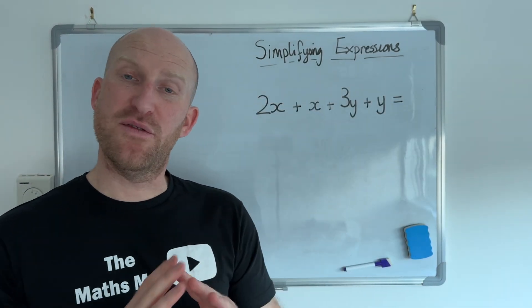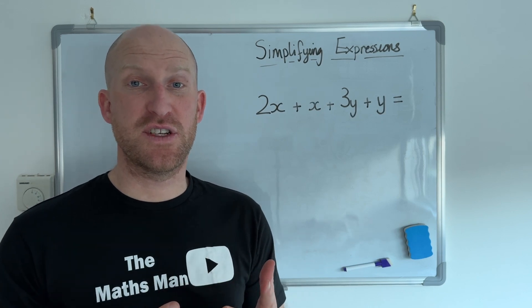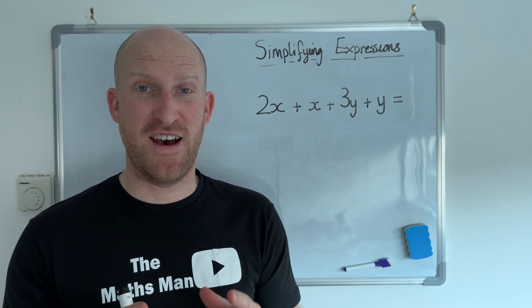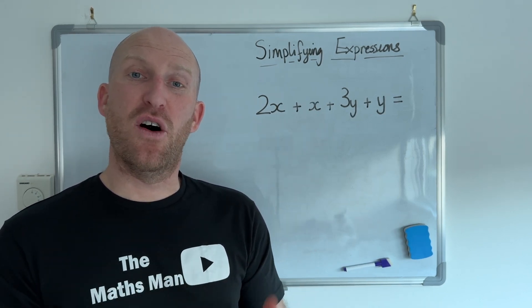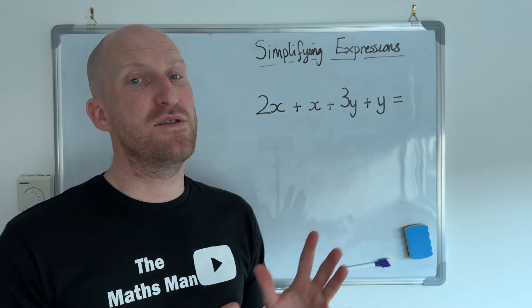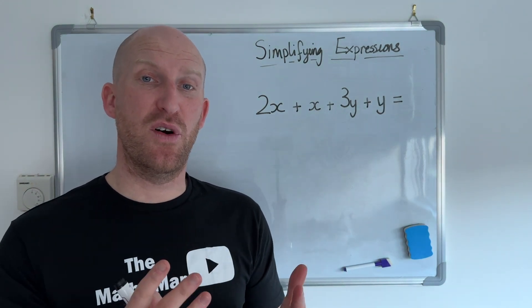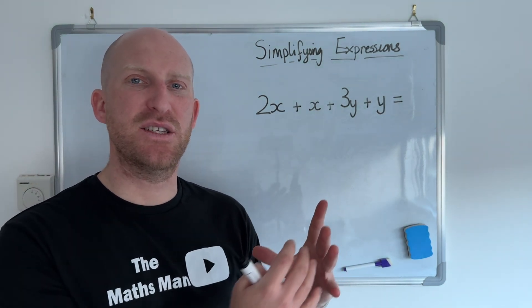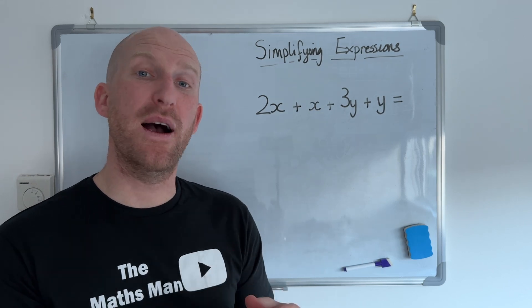So hopefully so far you've found that really easy and you're understanding it. But I promise you it does get harder. Now in all of the examples that we've looked at so far there's only been one term involved. So there's only been x in the question or there's only been y in the question.